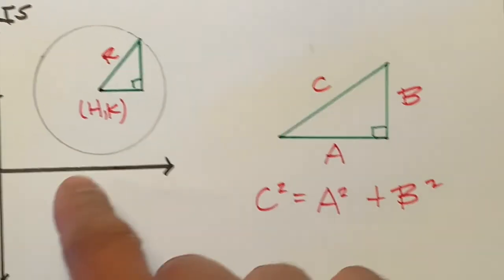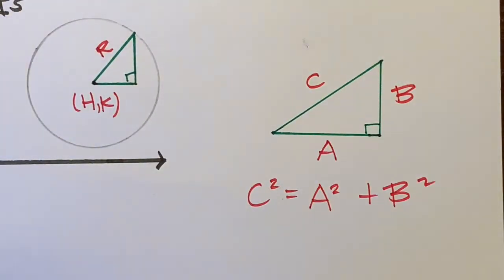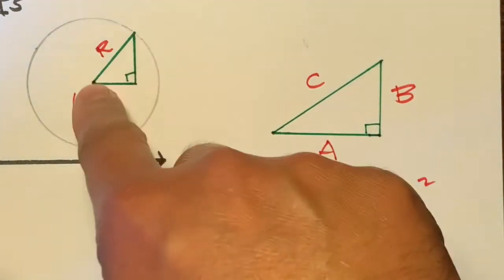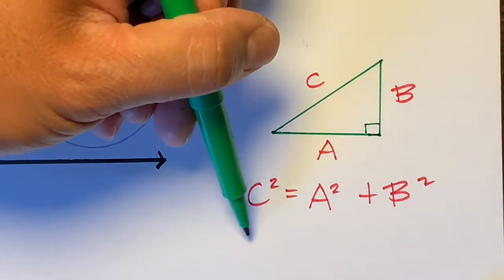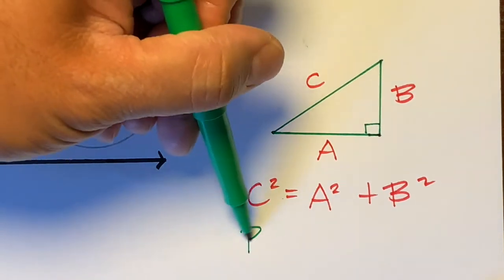We could already substitute something into this Pythagorean theorem. C squared equals A squared plus B squared. What can we plug in for this C? R, because that's our hypotenuse. So we'll just write R squared.